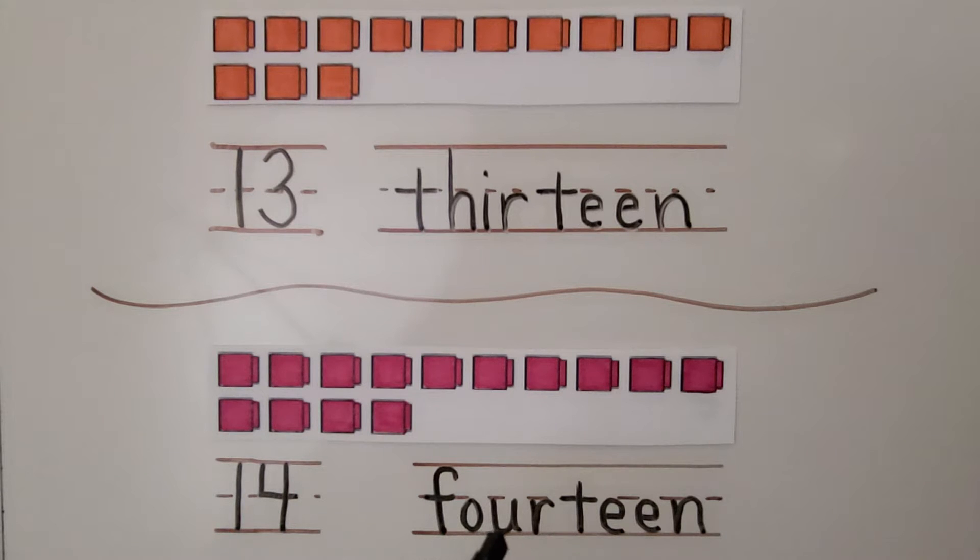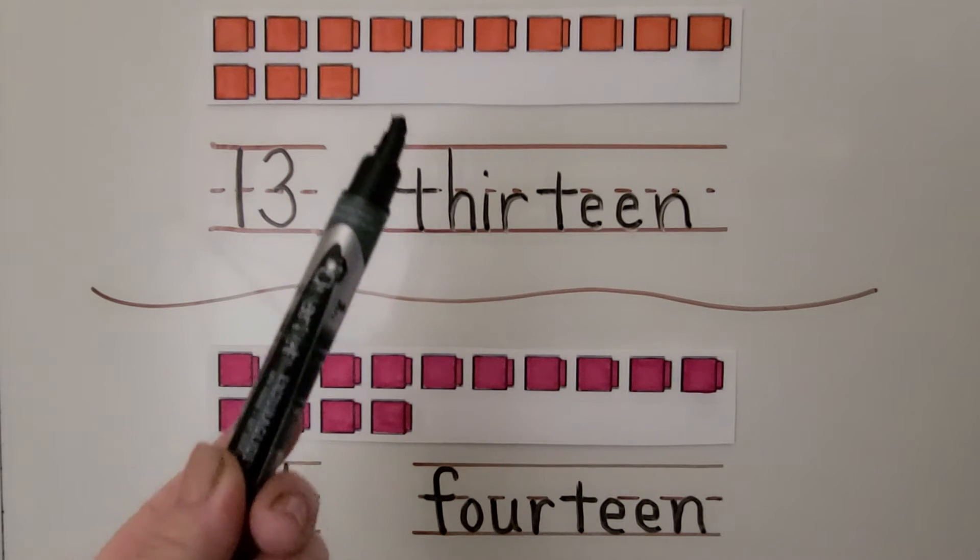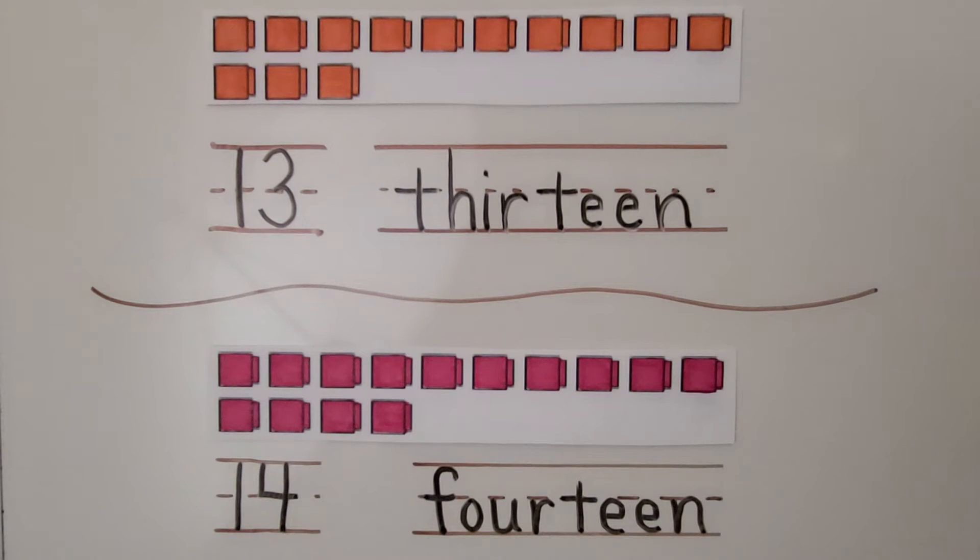F-O-U-R-T-E-E-N. The number 14 is a 1 and a 4 right next to each other. These two numbers together next to each other are the number 14. 14 is 1 more than 13. We can see there's 1 more cube here than 13. 14 is 1 greater than 13.